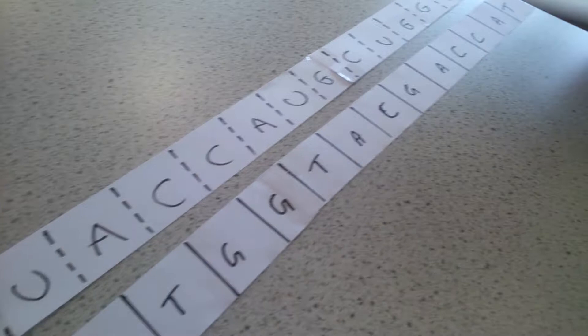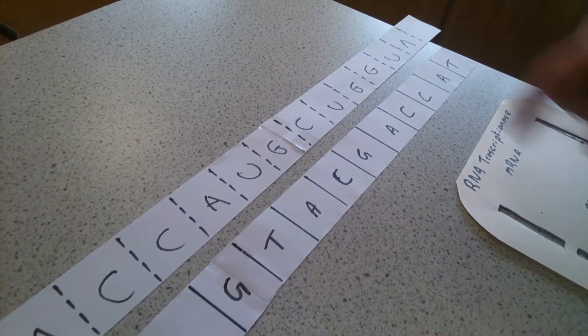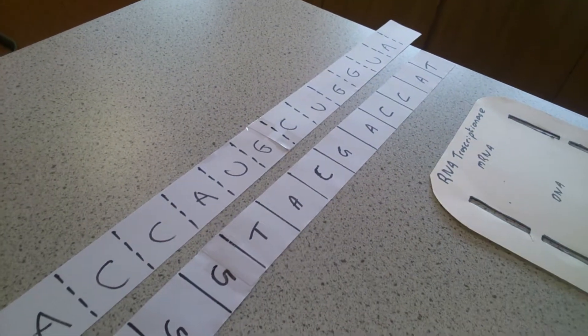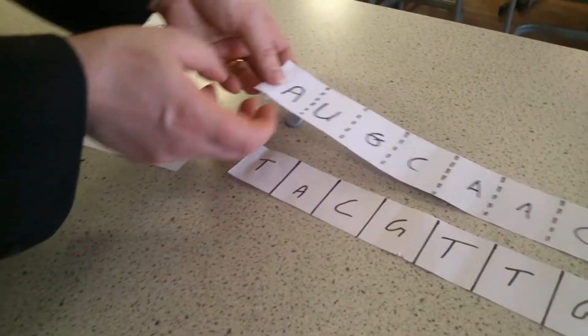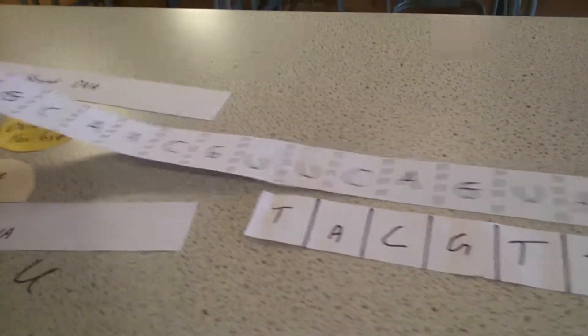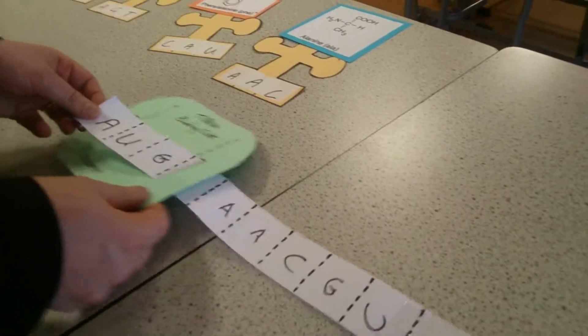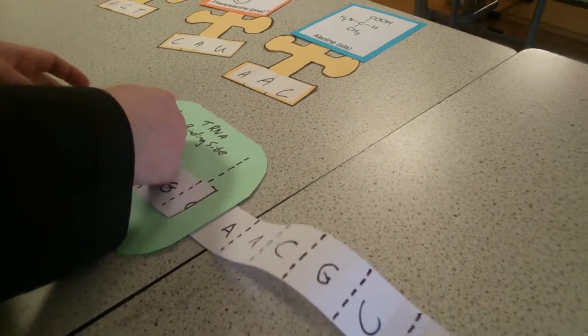The RNA transcriptase dislodges when it reaches the stop codon. The messenger RNA moves out of the nucleus through the nuclear pore into the cytoplasm until it reaches a ribosome.